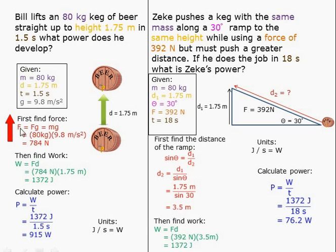First I have to find force. Force of gravity is mass times gravity, which is 80 kilograms times 9.8 meters per second squared, which equals 784 newtons.